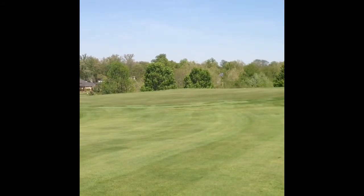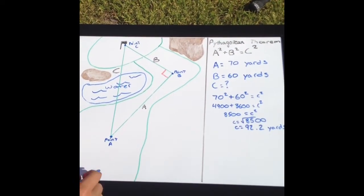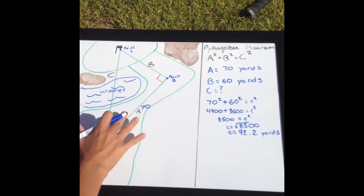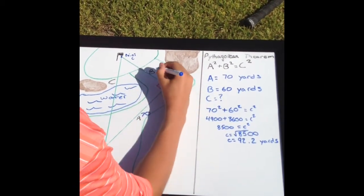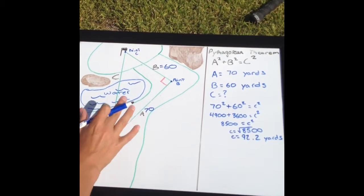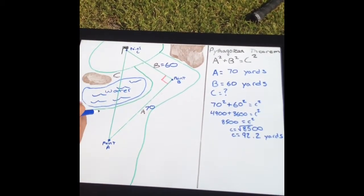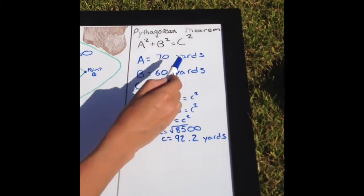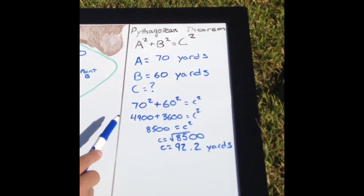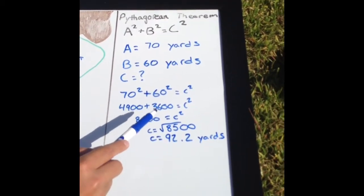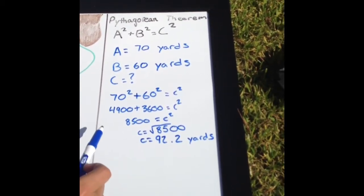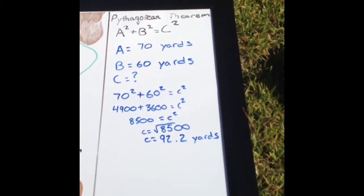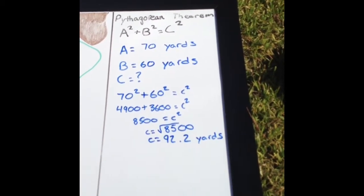A squared plus B squared equals C squared. Here's our diagram of the hole and our work for that. Leg A equals 70 yards, leg B equals 60 yards. Now that we have both legs figured out, we can find the hypotenuse, which is going over the water. We have 70 squared plus 60 squared equals C squared. Those numbers come out to be 4,900 plus 3,600 equals C squared, which adds up to 8,500.